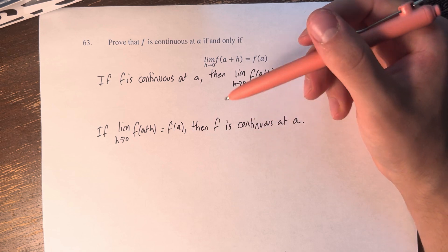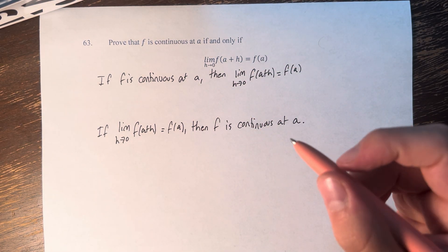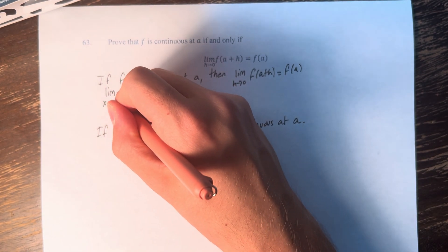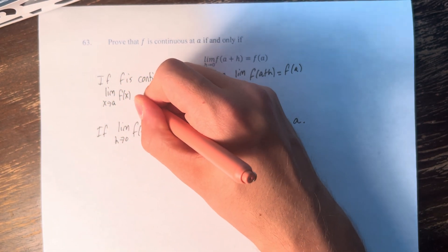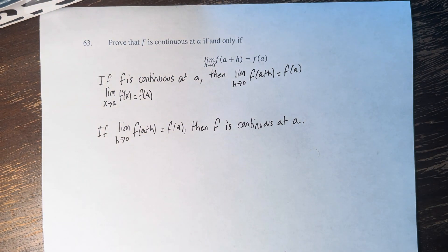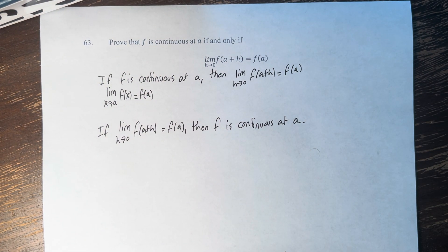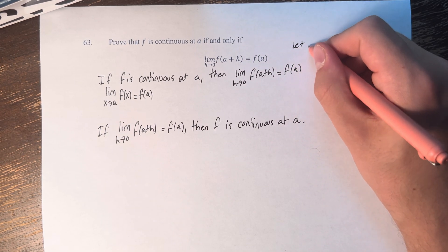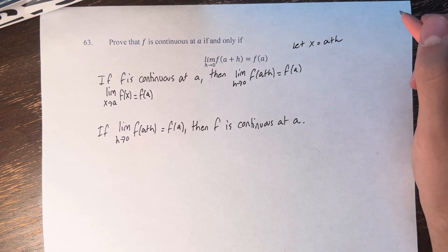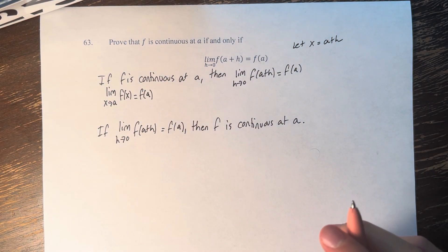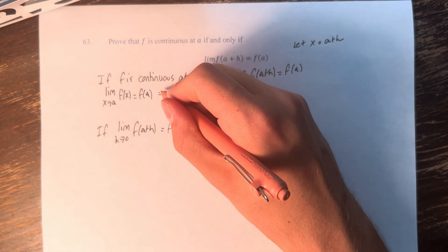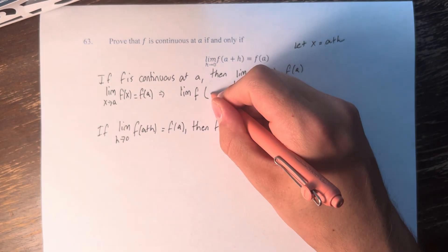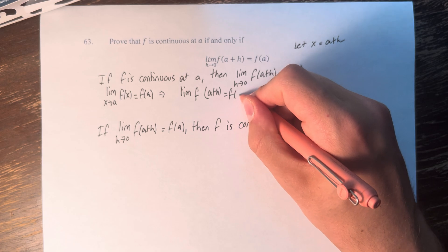For this first statement, we are using the fact that f is continuous at a, which means that the limit as x approaches a of f of x is equal to f of a. What we need to do is let x equal a plus h — this is a substitution we're going to do. Therefore, this gives us the limit of f of a plus h is equal to f of a.